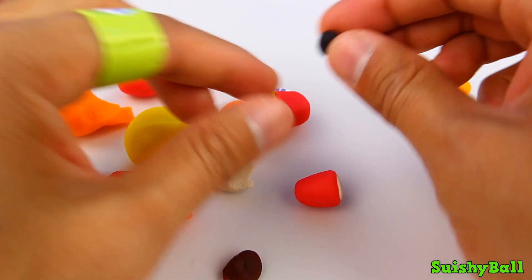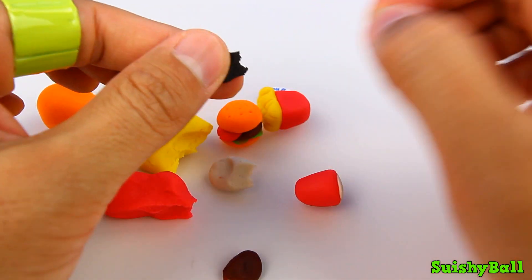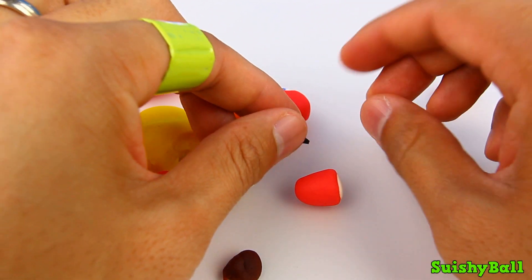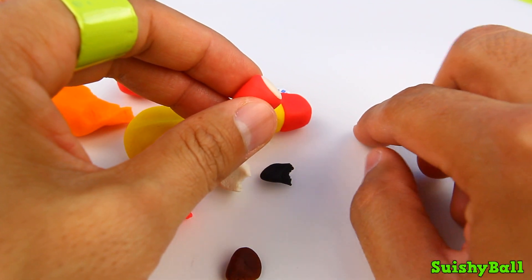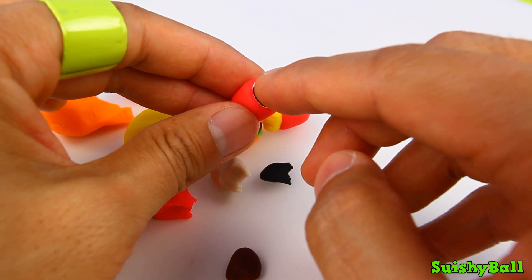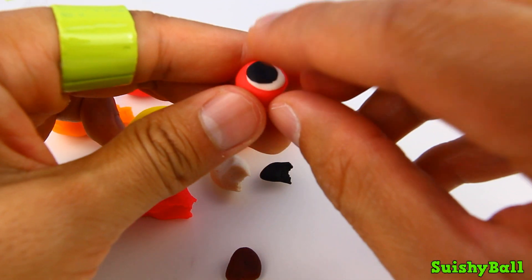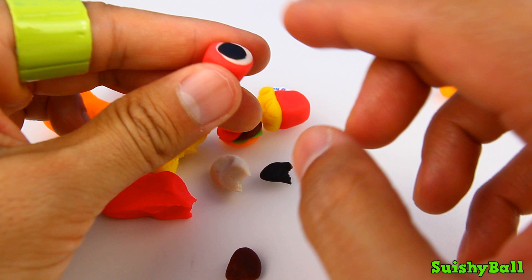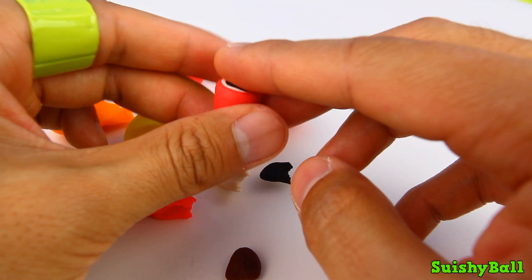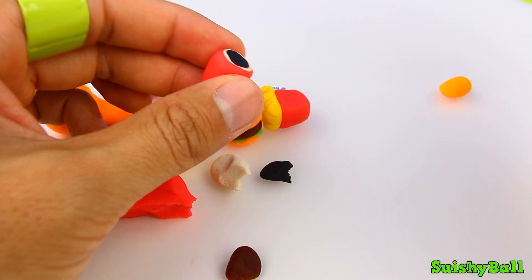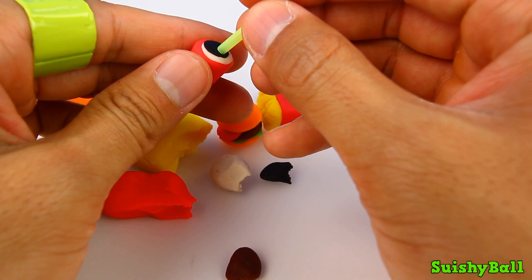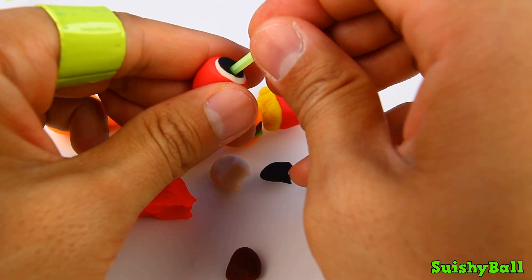Then I'm going to add a piece of black play-doh so that it looks like there's some Coca-Cola in there. Okay, and finally the last detail I'm going to add is a little straw.